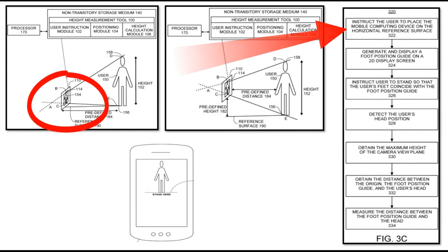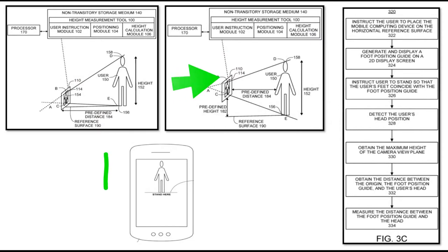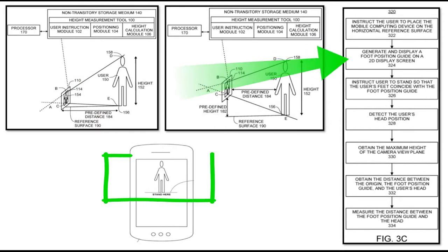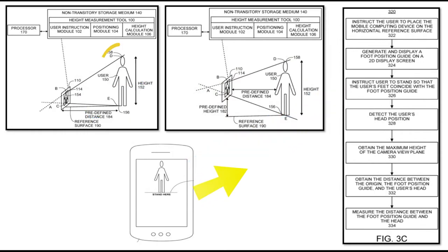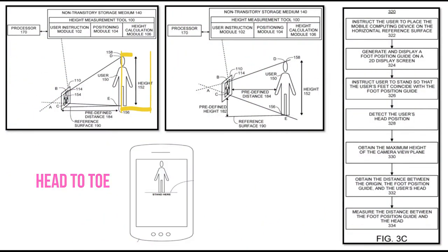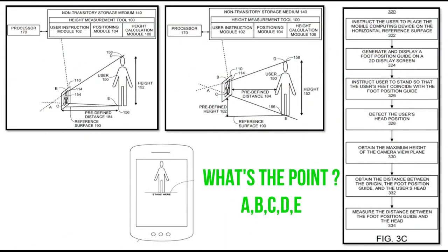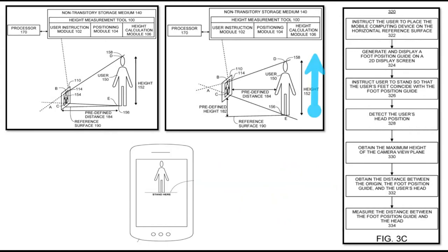To start with, instruct the user to place the mobile computing device on the horizontal reference surface. Generate and display a foot position guide on a 2D display screen. Instruct the user to stand so that their feet coincide with the foot position guide. Detect the user's head position. Obtain the maximum height of the camera view plane. Obtain the distance between the origin, the foot position guide, and the user's head.